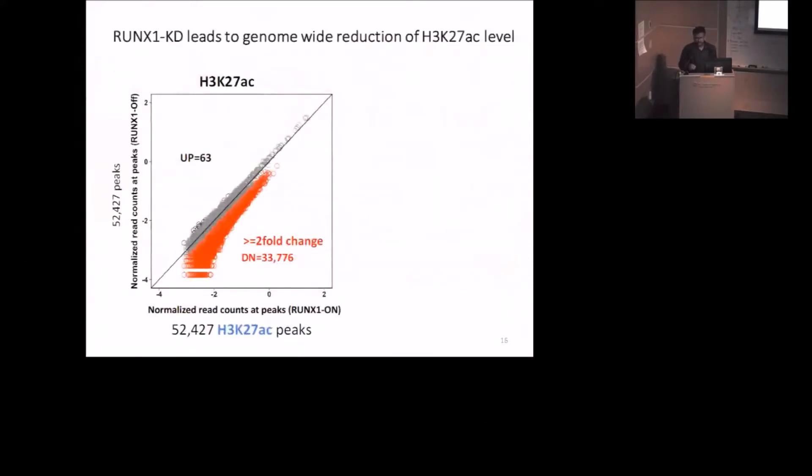So at first, I looked at the changes of acetylation level when we knock down RUNX1 gene. Here in the scatter plot, I plotted all the enhancer regions, 52,000 regions. Each dot represents each H3K27 acetylation region. The x-axis shows normalized read counts of those regions in the control sample, and the y-axis is in the RUNX1 treatment sample. The red dots showed more than two-fold loss of acetylation level when we knock down RUNX1 gene. This is telling us that upon RUNX1 knockdown, the majority of acetylation peaks show loss in their acetylation activity.